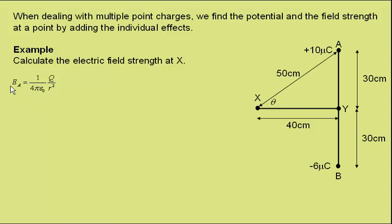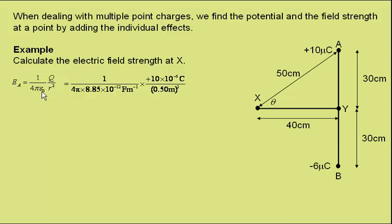The electric field strength at X due to charge A is given by this formula, where epsilon-zero is the permittivity of free space, given on your datasheet as 8.85 times 10 to the minus 12 farads per metre. Charge A is 10 times 10 to the minus 6 coulombs, and the distance is 0.5 metres. This gives an electric field strength due to charge A of 3.6 times 10 to the 5 newtons per coulomb.